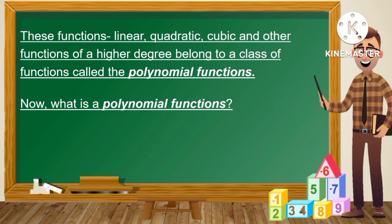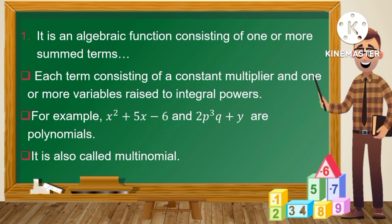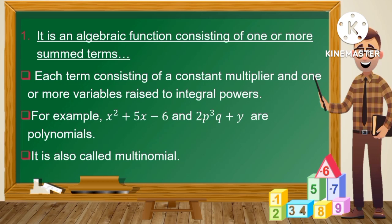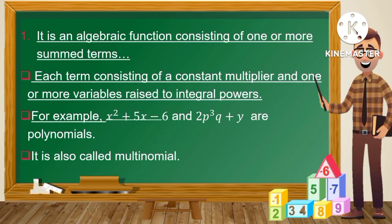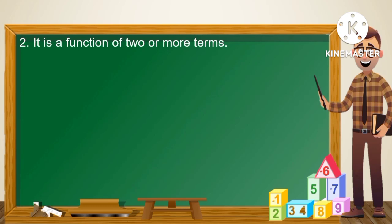What is a polynomial function? It is an algebraic function consisting of one or more sum terms, separated by plus or minus signs. Each term consists of a constant multiplier and one or more variables raised to integral powers. For example, x squared plus 5x minus 6, and 2p cubed q plus y are polynomials. It is also called a multinomial, and it is a function of two or more terms.